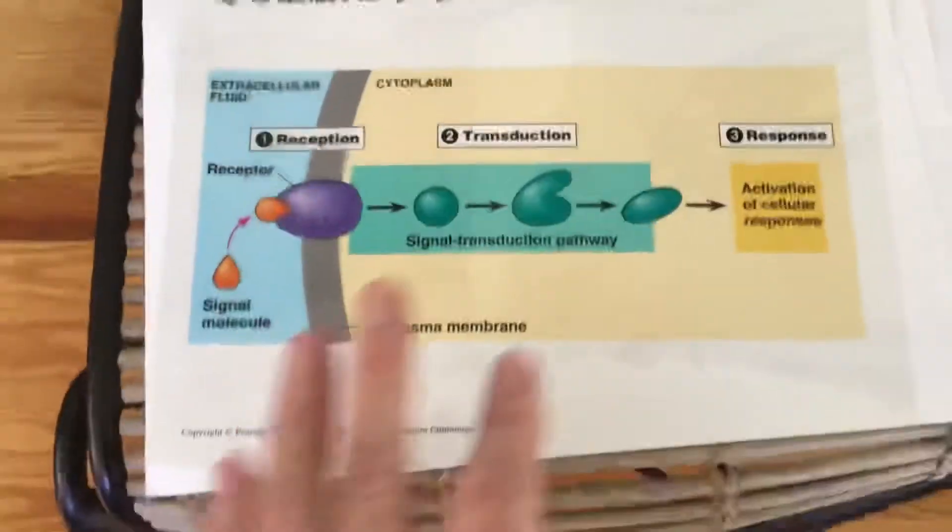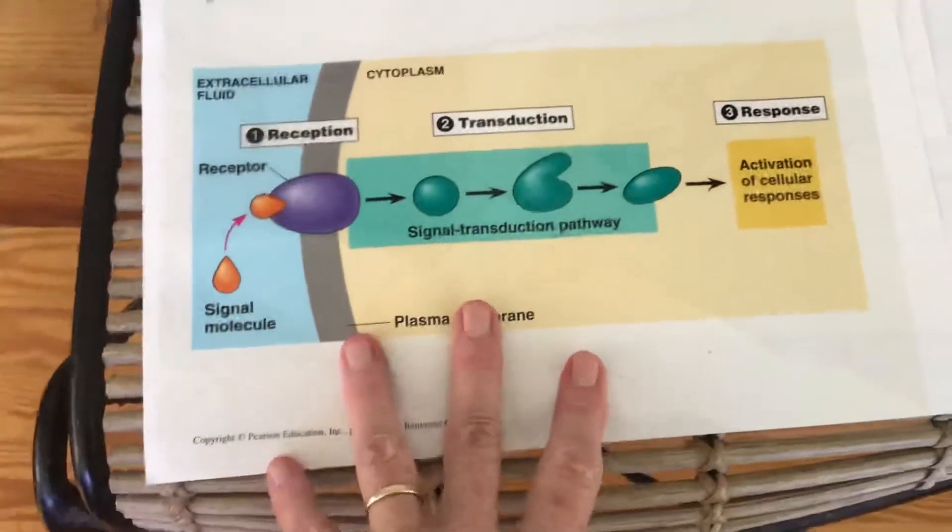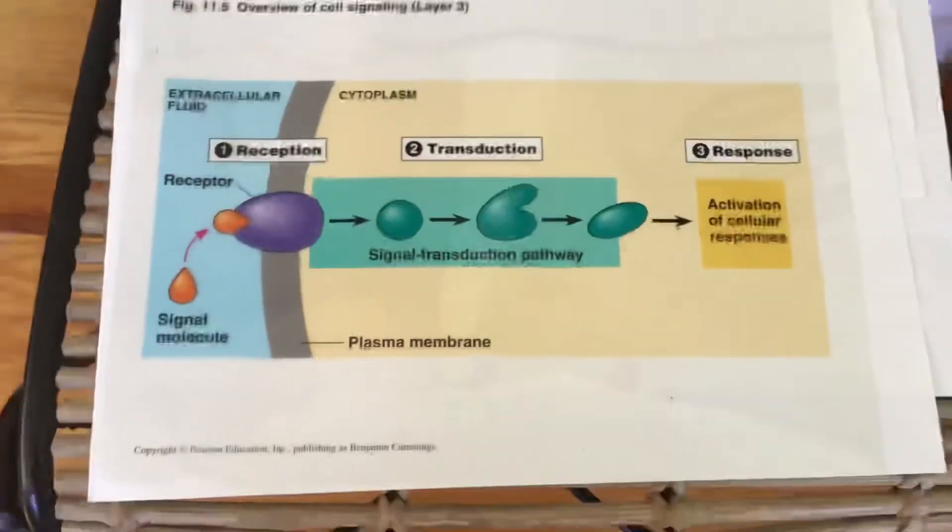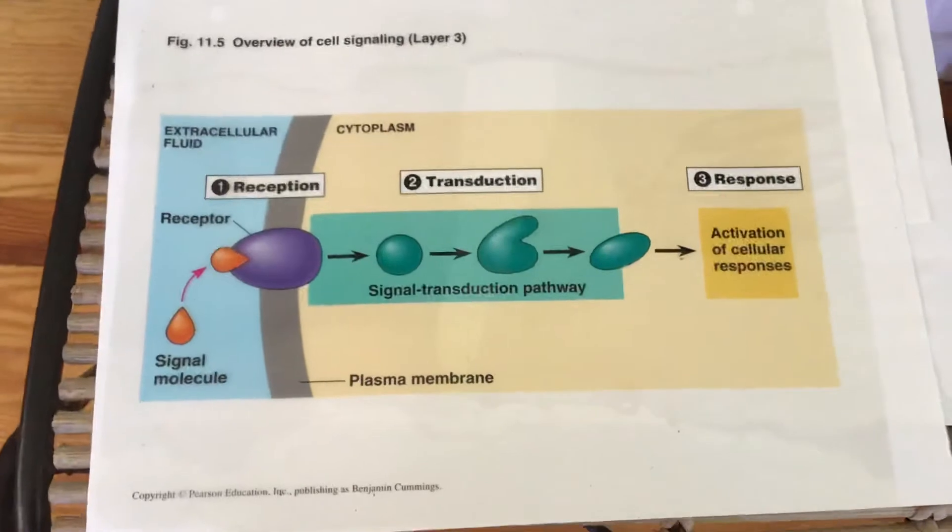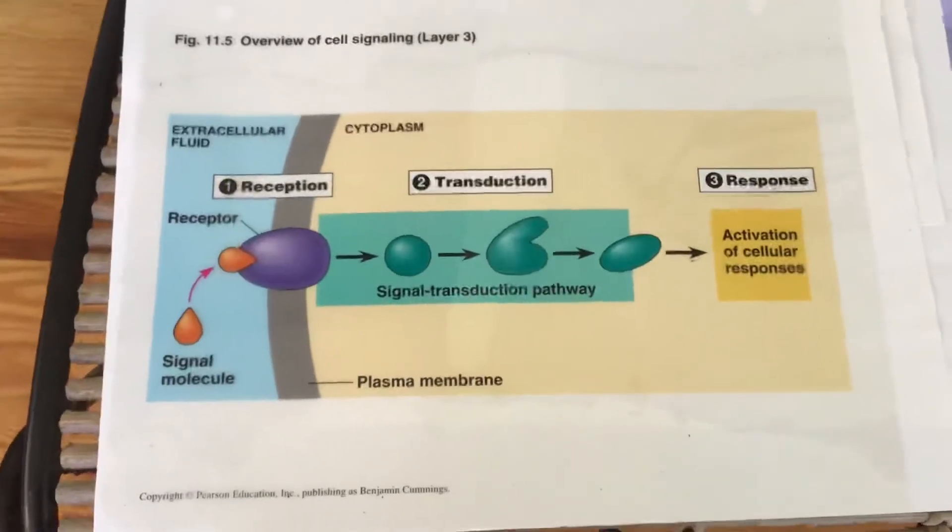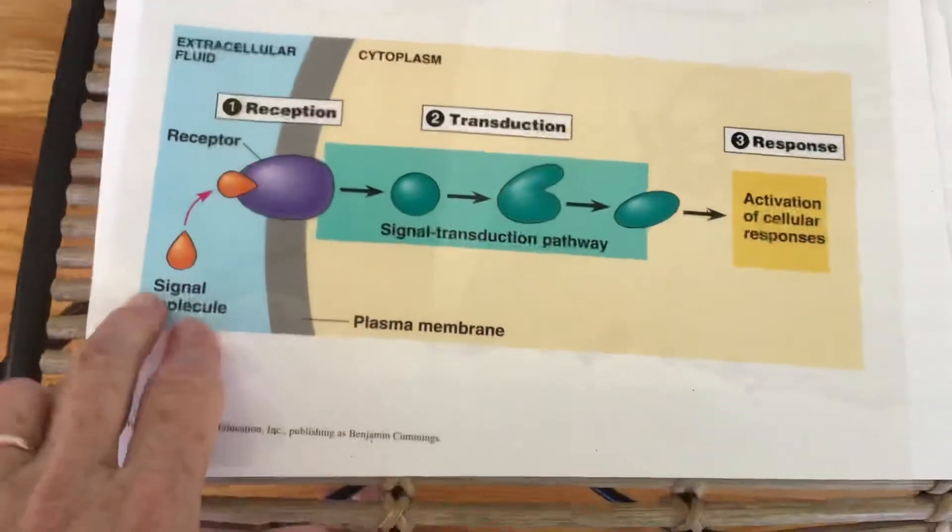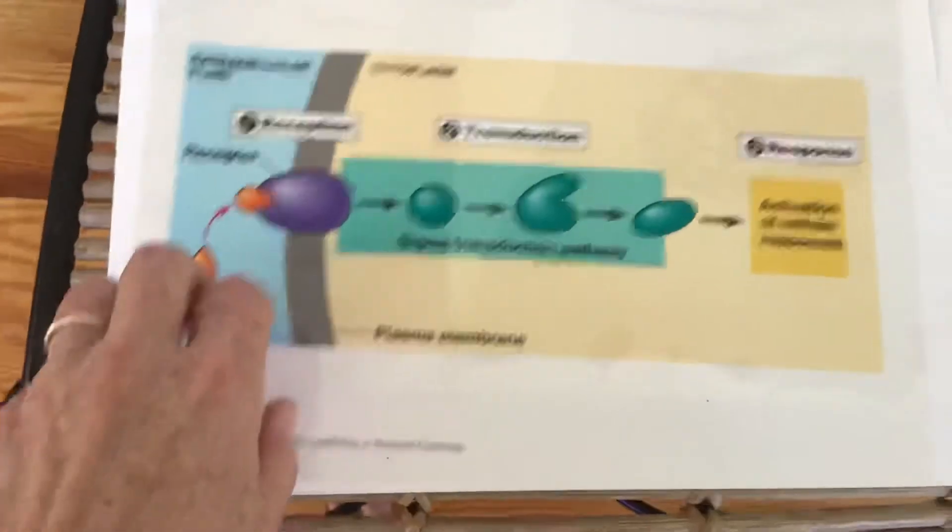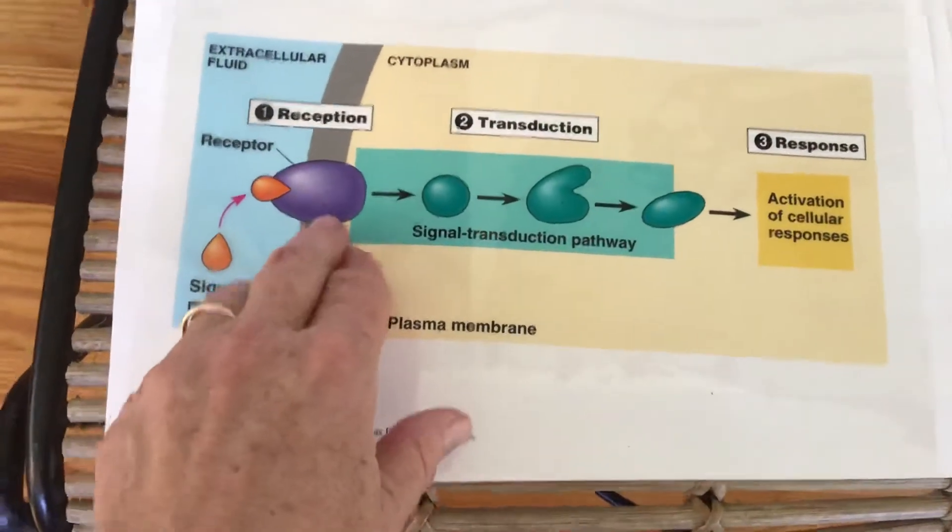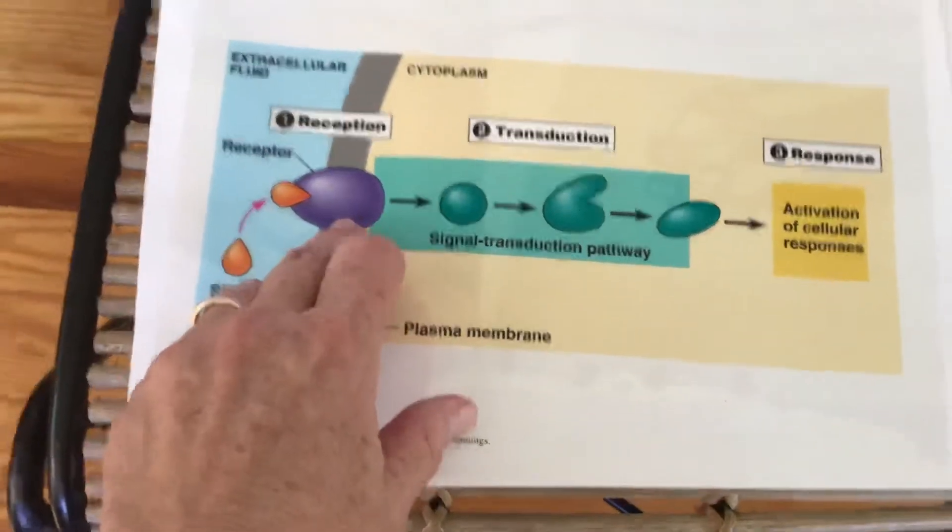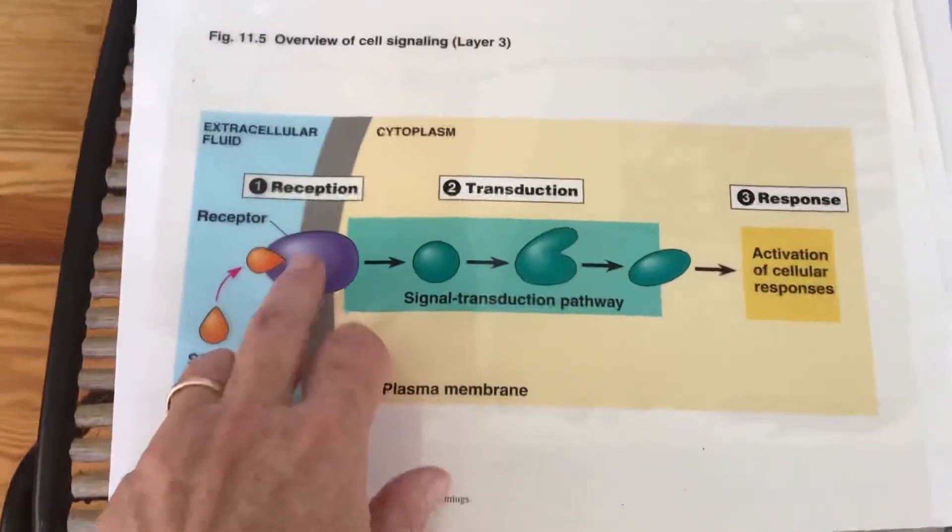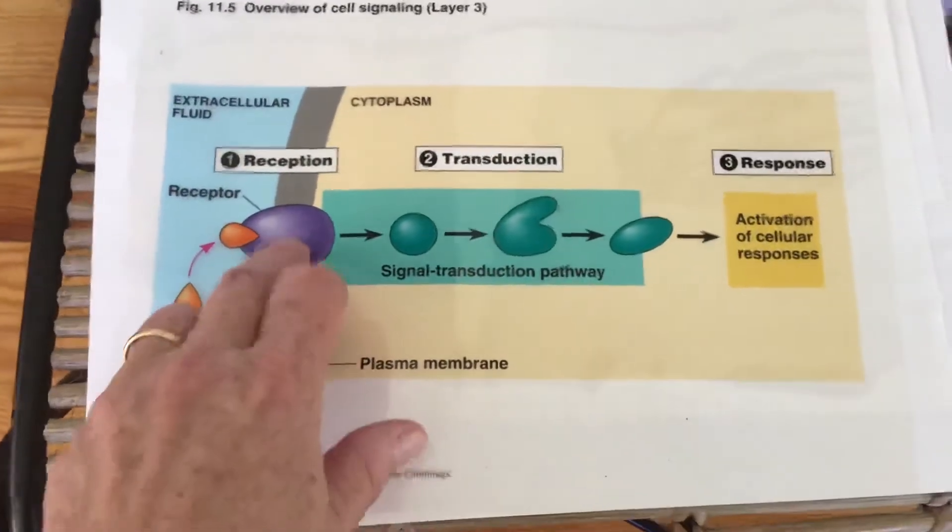All right so this is called cell signaling. For example this is the way a lot of cells will take on hormones as the signal molecule. So there will be a protein of some sort that is the receptor protein that is found in the cell membrane that will take on this signal molecule.